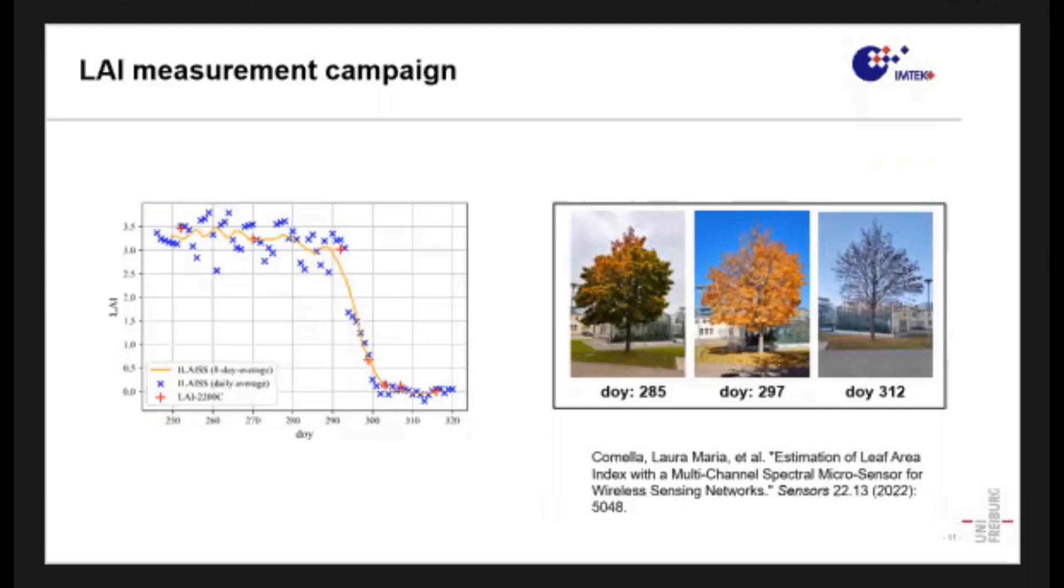At day 293, we have a big difference. As you can see, one measurement is here and the next one is here, and this corresponds meteorologically with a storm. And then of course the LAI goes down continuously till it reaches the minimum when the tree has lost all the leaves.